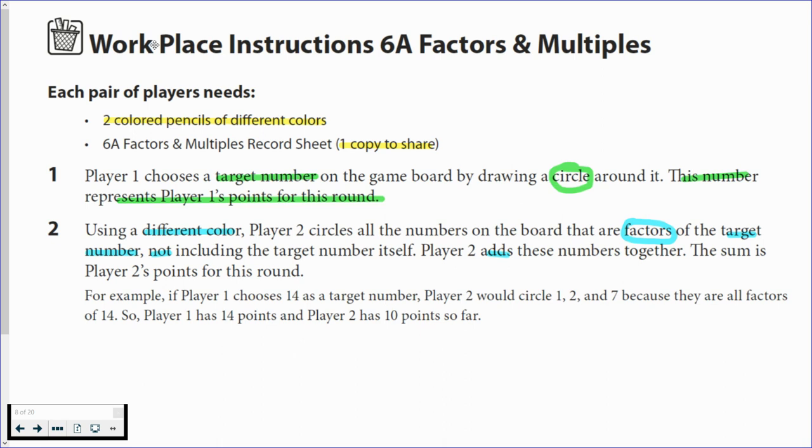We're going to explain the workplace instructions for 6A factors and multiples. Each pair of players needs two colored pencils of different colors. I would suggest playing this with a parent or an older brother or sister or maybe a twin. One person gets one color and their partner gets the other color, and you just need one of those copies to share. I will put a copy of it as a PDF if you want to print another one too.